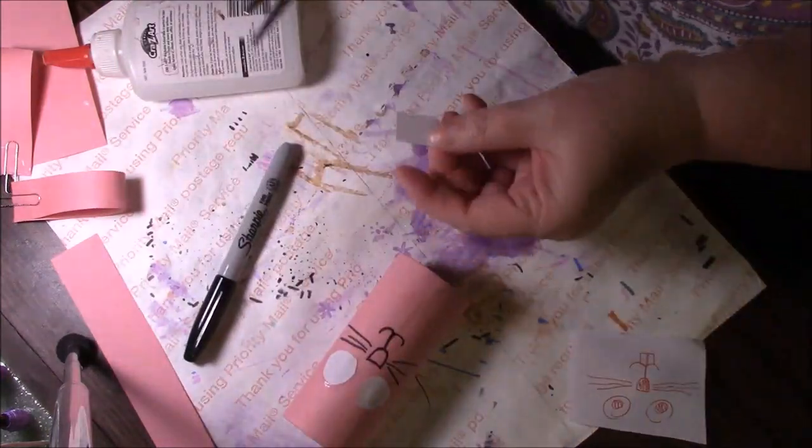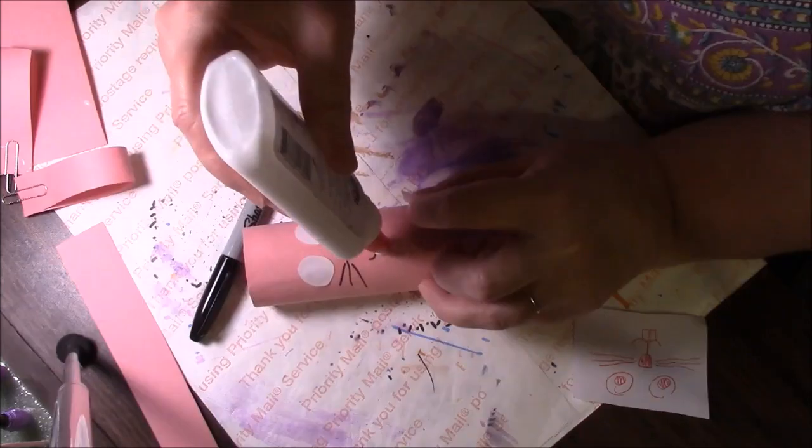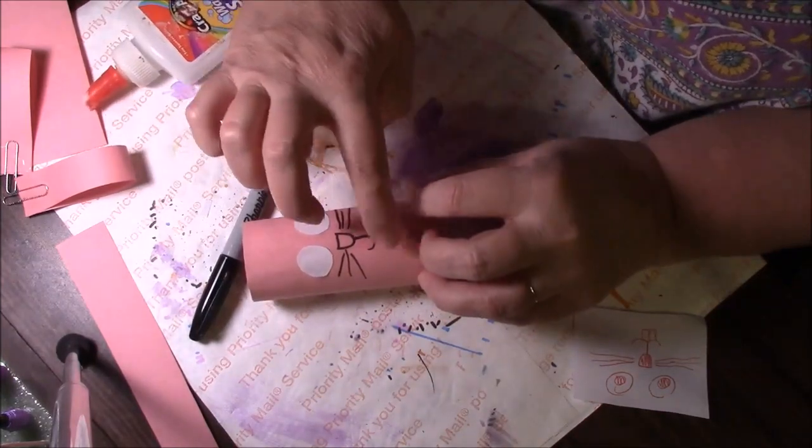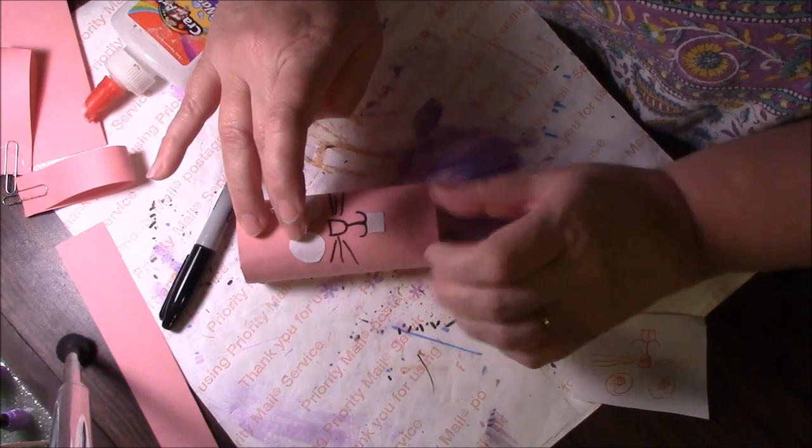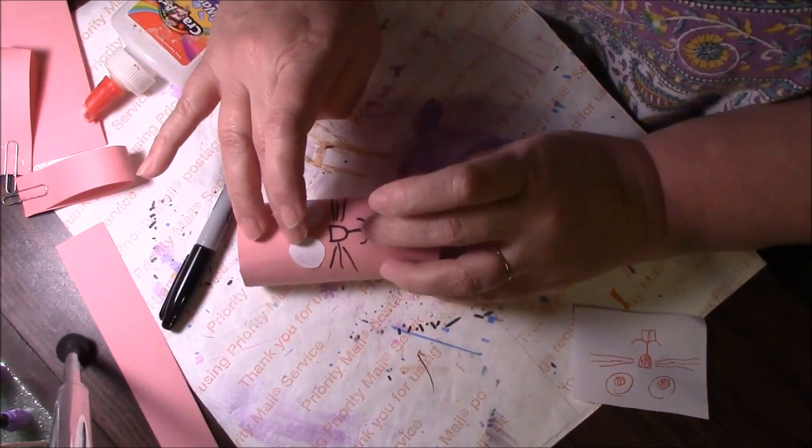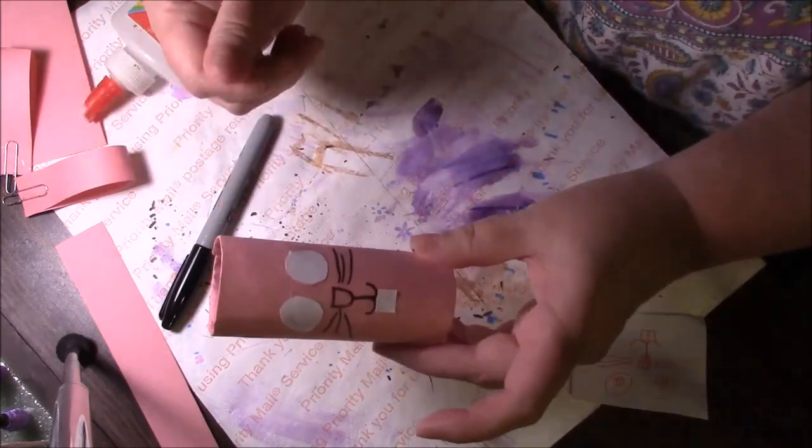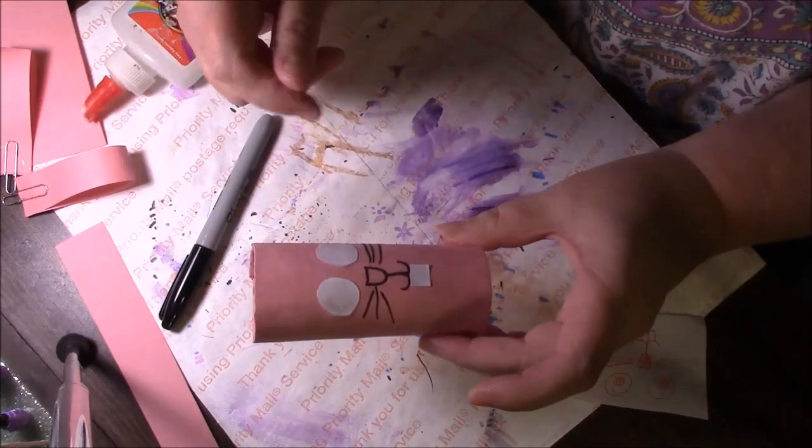We're going to take a little scrap piece of paper. I'm going to put a little bit of glue at the mouth and glue that little white piece right there. That's going to be teeth. I'm going to let that dry and then I will show you how I'm going to finish the eyes.